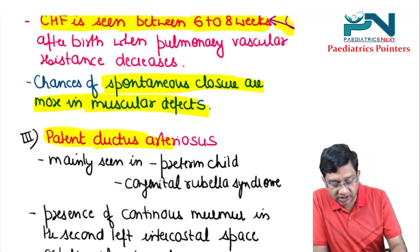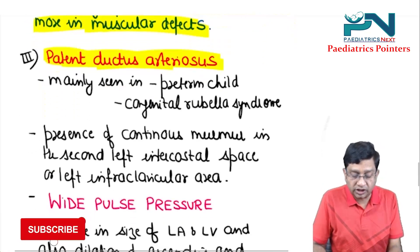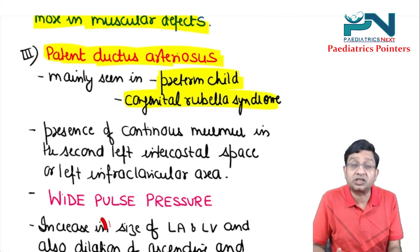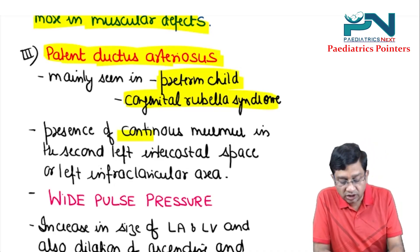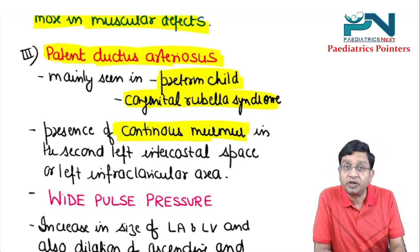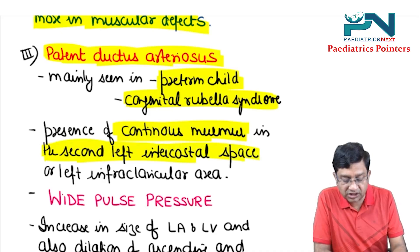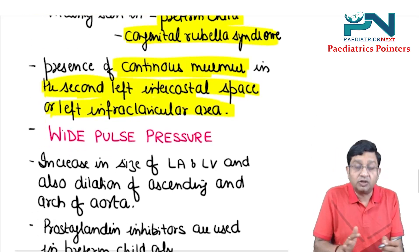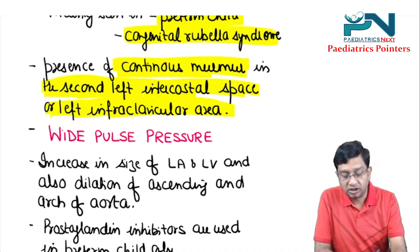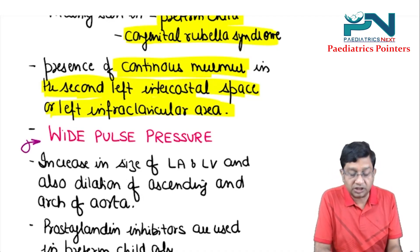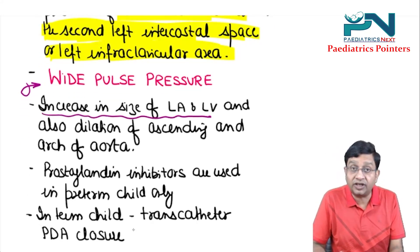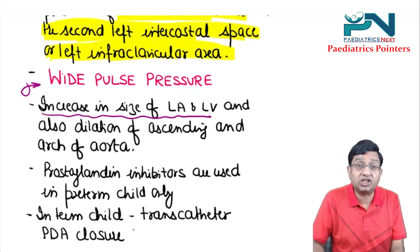Patent ductus arteriosus (PDA) can be seen in two conditions: preterm child and congenital rubella syndrome. In PDA, there is a continuous murmur present in the second left intercostal space or left infraclavicular area. There is wide pulse pressure. There is increase in size of left atria and left ventricle, and dilation of the ascending aorta and arch of aorta.